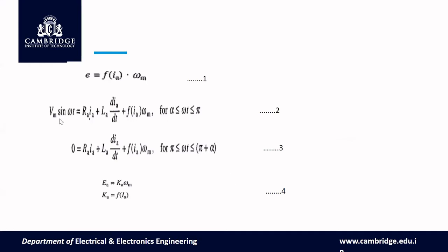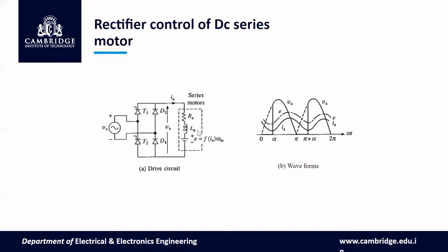The equation seen in the previous class is Va = Ra·Ia + La·(dIa/dt) + back EMF e. For the duty interval, we replace Va by Vm·sin(ωt), so the equation becomes Vm·sin(ωt) = Ra·Ia + La·(dIa/dt) + F(Ia)·ωM, substituting back EMF from equation one. This applies for the interval from α to π.